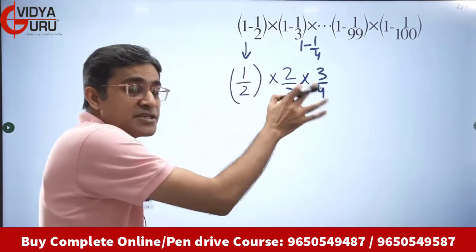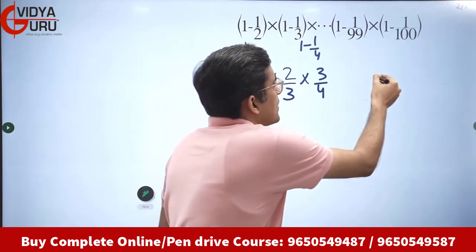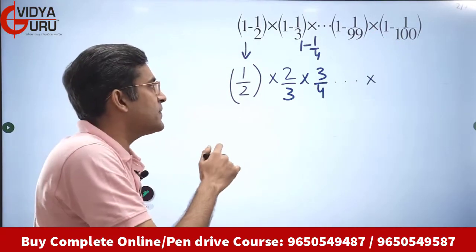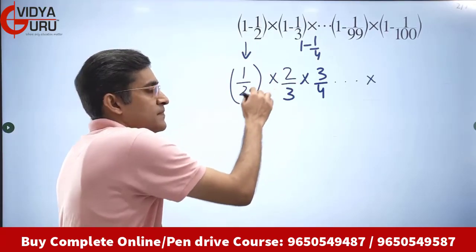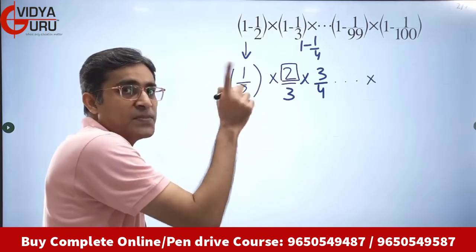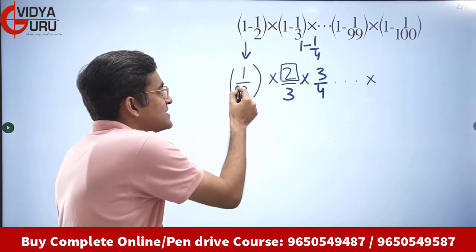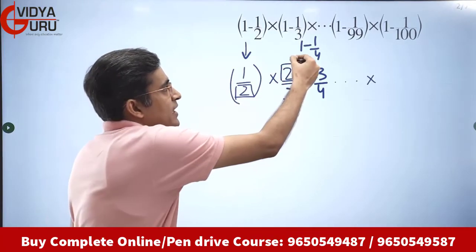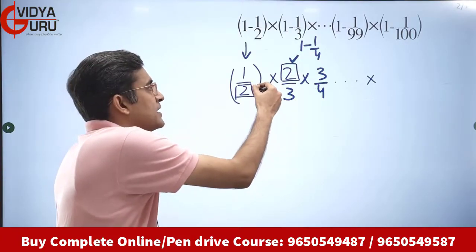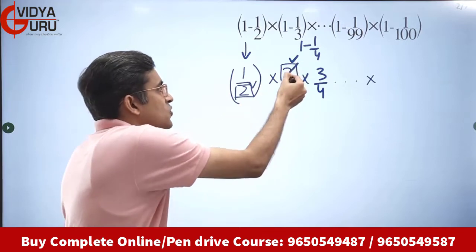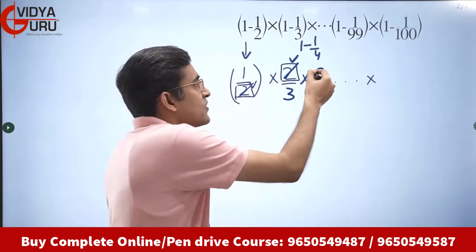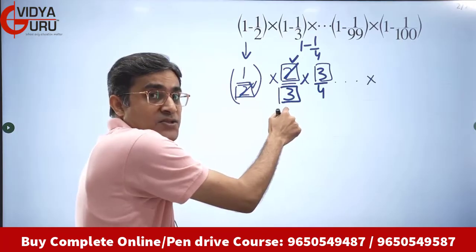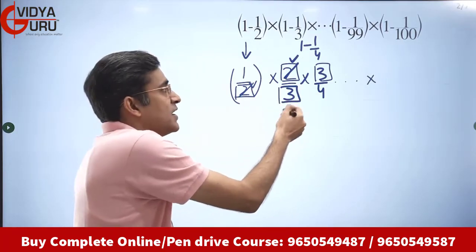Such a series continues. The important part is that the numerator of the next term gets cancelled by the denominator of the previous term. You can see: the numerator of the next term gets cancelled by the denominator before it. So 2 and 2 get cancelled; similarly, 3 in the numerator gets cancelled by the 3 in the denominator of the previous term.